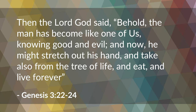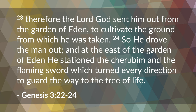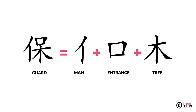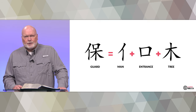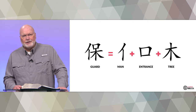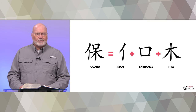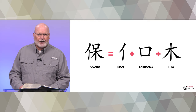From Genesis chapter 3, verses 22 to 24, here's the Chinese character for 'guarding,' made up of three characters: 'man,' then the symbol representing 'entrance,' and then the symbol for 'tree.' So the man is guarded from entering to the tree — that's exactly what we see in Genesis 3, and that's what is represented in this Chinese character. It's interesting that the idea of guarding involves a tree and keeping a man away from that tree.